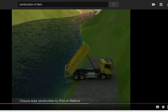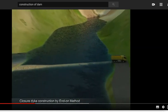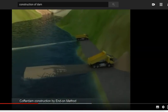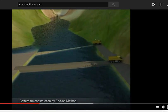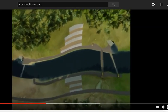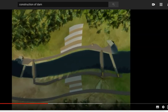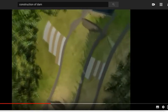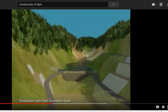Upstream and downstream closure dikes are constructed using excavated material by the end-on method. Upstream and downstream coffer dams are then constructed. Water between the coffer dams is pumped out to expose the river bed. Further excavation is now carried out up to the dam foundation level.